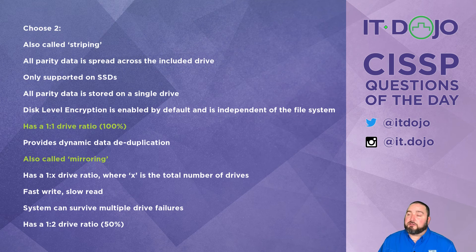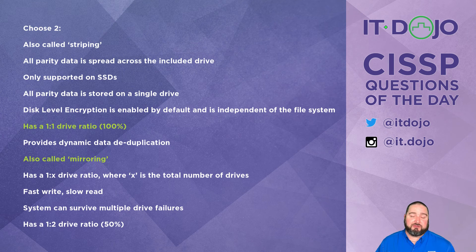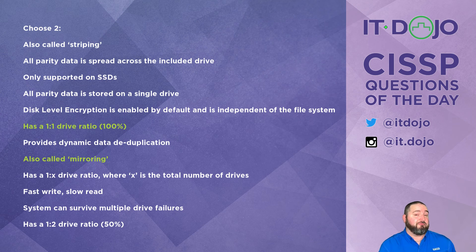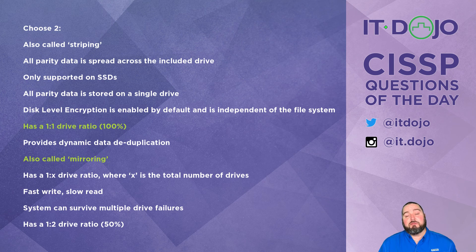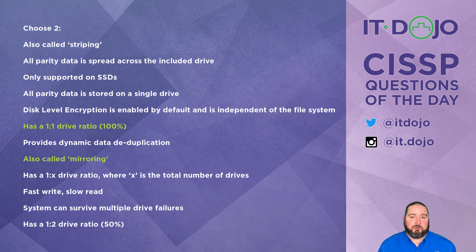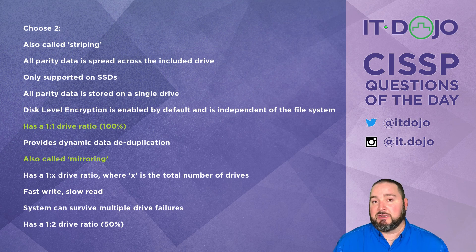It has a 1-to-X ratio where X is the number of drives — because RAID 1 doesn't use parity, this can't be right. Fast write and slow read? No, those are not characteristics of RAID 1 either. In RAID 1, the system can survive a single drive failure, but not multiple drive failures — you'd need a more robust solution for that. The last item says it has a 1-to-2 drive ratio, which can't be true since we already established it has a 1-to-1 ratio. So the two correct answers are: it's called mirroring and it has a 1-to-1 disk ratio.